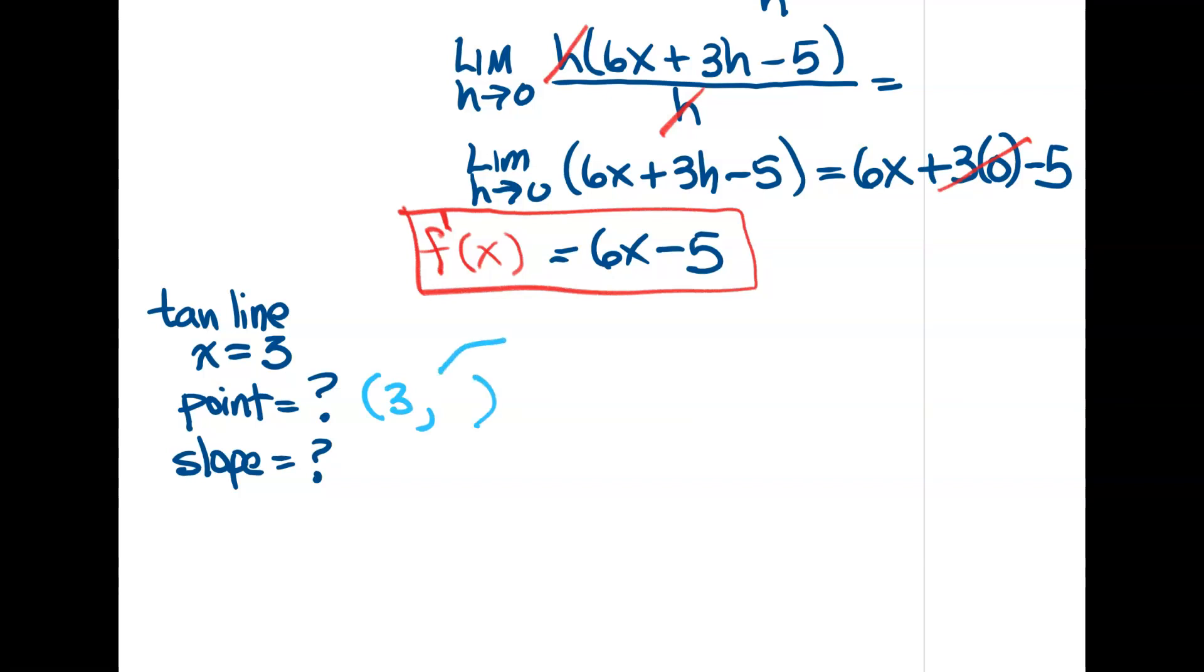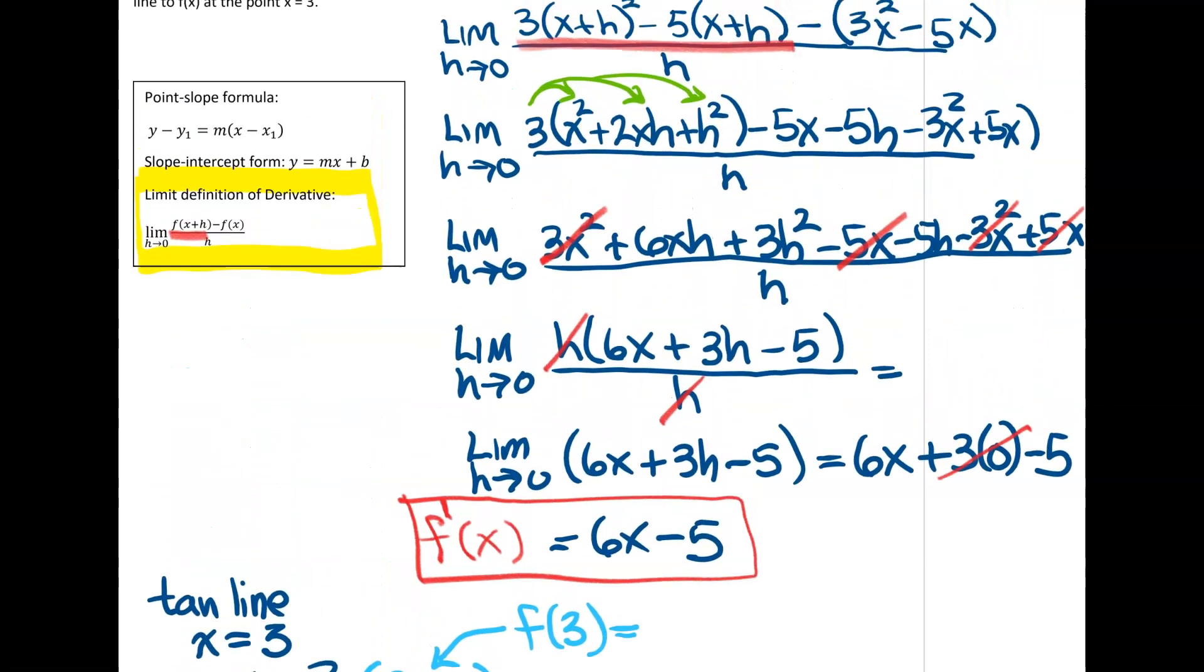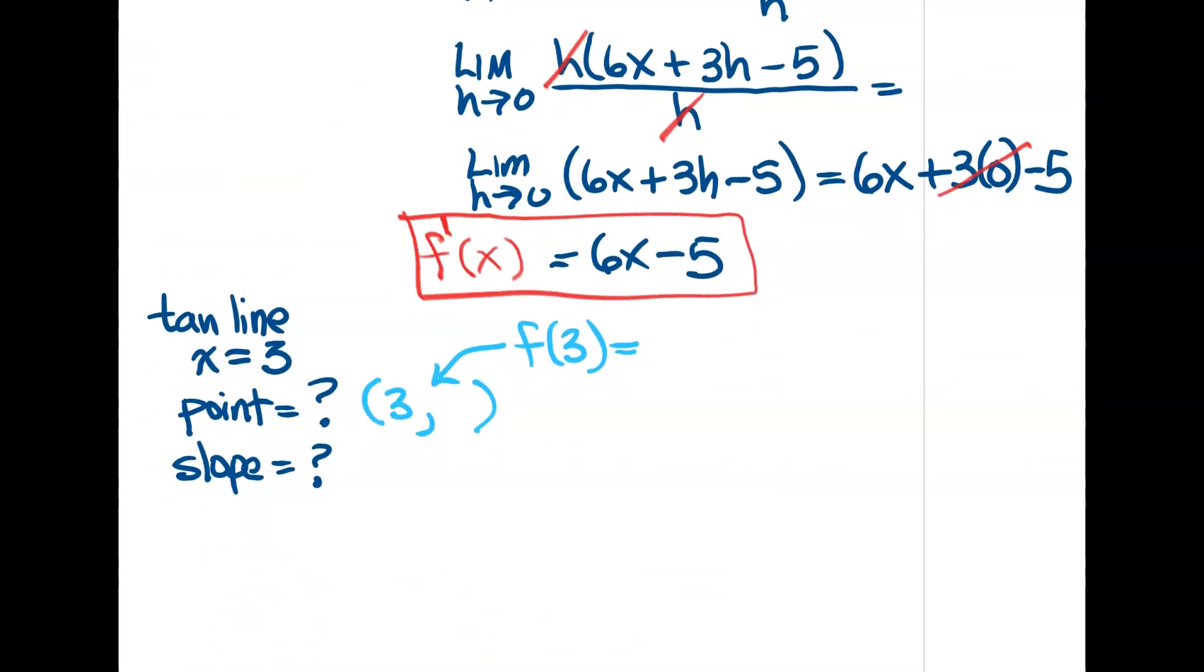So if you want the y value of the point, you can get the y value by using the function that they gave me. So we can find the y value by finding f of 3. So if I just take 3 and I plug that into the function, I'm going to get the y value at the x value of 3. So remembering what the function was, way back here, 3x squared minus 5x, I'm going to have 3 and then 3 squared minus 5 times 3. Okay, so working that out, we end up with a 9 times 3, 27 minus 15. So we get a y value here of 12.